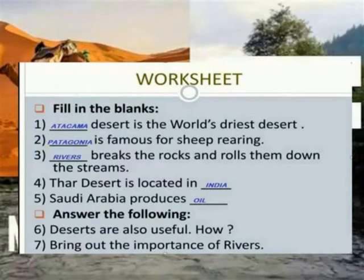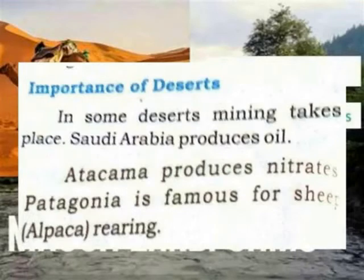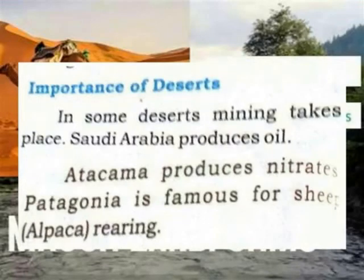Atacama Desert is the driest desert. There is desert in Thar, which is famous for the Thar Desert. Break the rock under the earth and down the stream. That desert is located in India. Saudi Arabia produces oil, so deserts are also useful. In some deserts, mining takes place. Saudi Arabia produces oil. Patagonia is famous for sheep rearing.